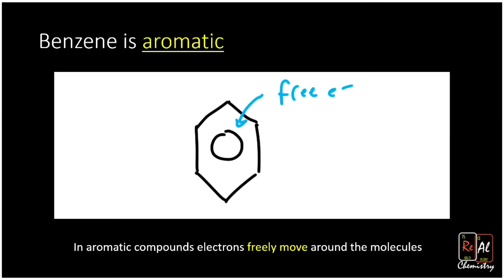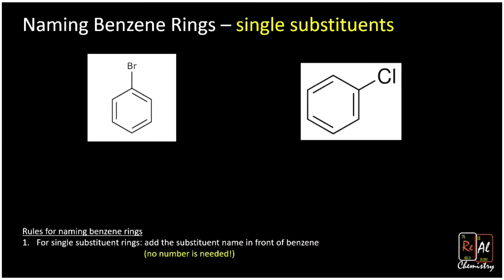In aromatic compounds like benzene, those electrons move freely around the molecule — that's kind of why it's special. Now let's talk about naming benzene rings. When we name benzene rings it looks really similar to when we name other cyclic compounds; the only real change is that we're going to use benzene as the base name.